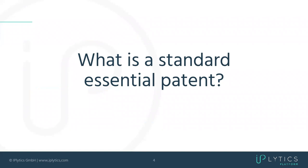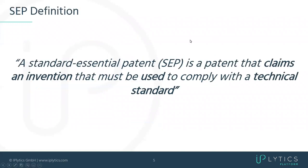What is a standard essential patent? The first definition: a standard essential patent is a patent that claims an invention that must be used to comply with a technical standard — that's the Wikipedia definition. A patent has claims, which are parts of the invention that are new and novel and involve a technical step. These claims are always infringed or used when you implement a standard. By standard I mean a technical standard like 5G, Wi-Fi, RFID, Bluetooth, or NFC.